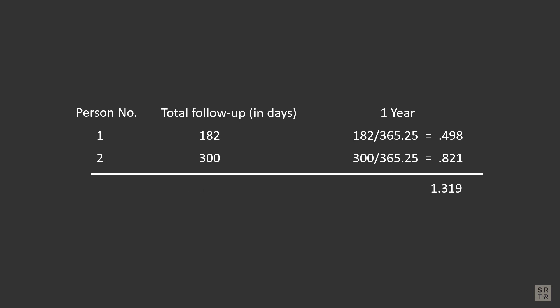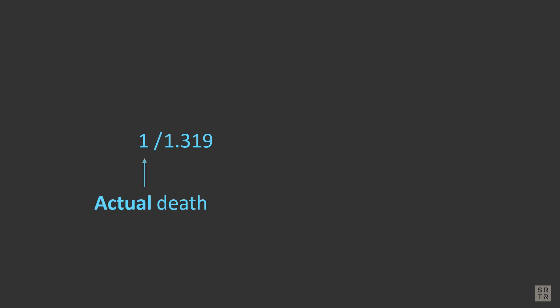The mortality rate is calculated by dividing the number of deaths by the person years. If there was one death, then 1 divided by 1.319 equals 0.758 events per person year. Because events per 100 person years is reported, 0.758 is multiplied by 100 to get 75.8 events per 100 person years. 75.8 is the mortality rate.